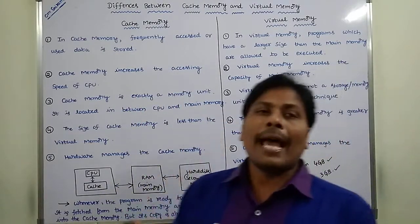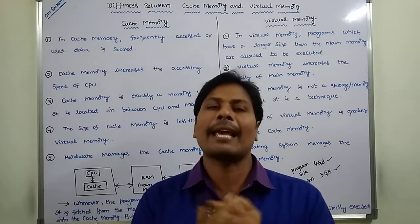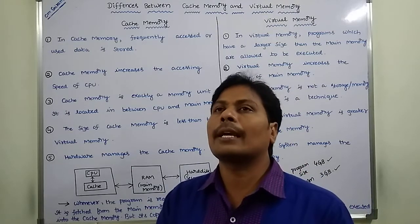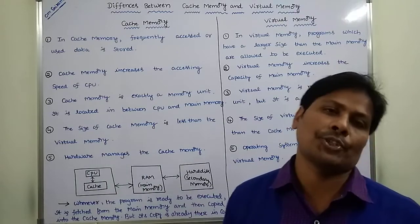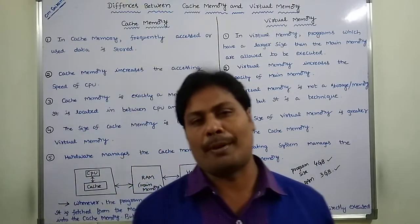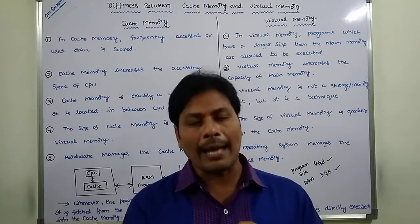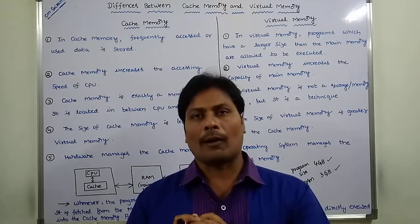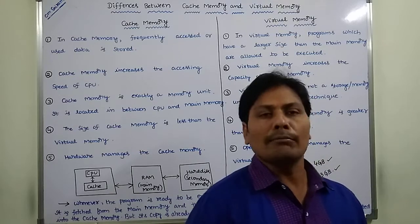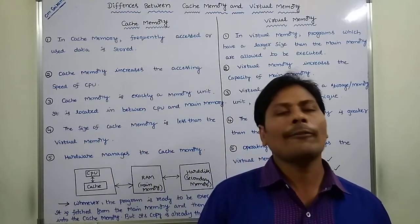The size of cache memory is less than virtual memory. Cache memory size is very small, whereas virtual memory size is very large. When comparing cache memory and virtual memory, the capacity of cache memory is very less, whereas the capacity of virtual memory is very large. So the size of cache memory is always less than the capacity of virtual memory, and the size of virtual memory is always larger than the size of cache memory.